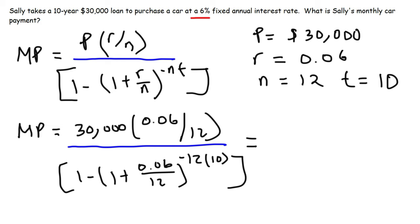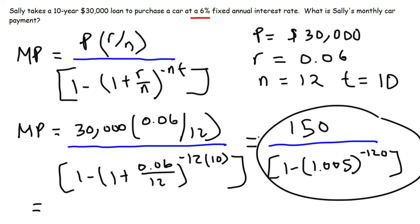So let's do this one step at a time. 30,000 times 0.06 divided by 12, that's 150. This is going to be divided by 1 minus (1 plus 0.06 divided by 12) which is 1.005, raised to negative 12 times 10, that's negative 120. So go ahead and plug in this entire thing in your calculator. Make sure to put two sets of parentheses and don't forget to close it at the end, otherwise your answer might be different.